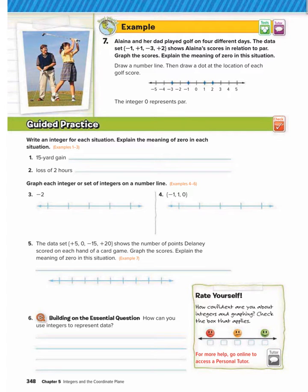Workbook page 348, lesson 5.1, Guided Practice. Write an integer for each situation, then explain the meaning of zero in each situation.